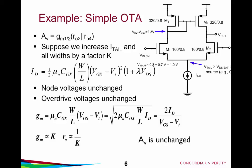Let's take a look at a simple example — a single-stage OTA. It has a voltage gain AV of GM1 (or GM2, assuming they're the same) multiplied by the parallel combination of the output resistances of transistors M2 and M4. Suppose we increase I-tail and all of the widths by a factor K — so we increase the width of M1, M2, M3, and M4 all by a factor K. How does the gain change?